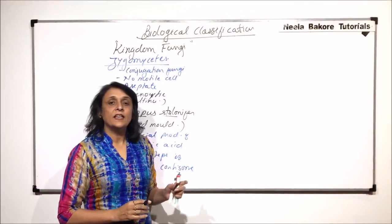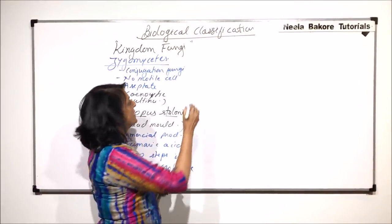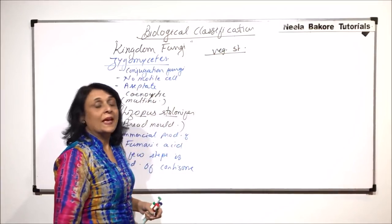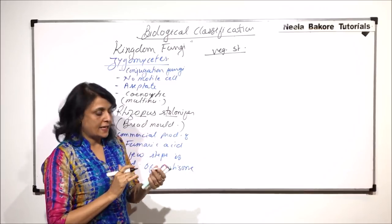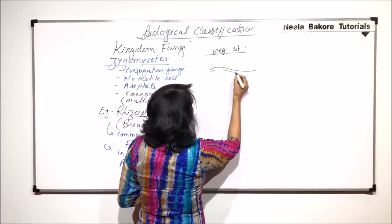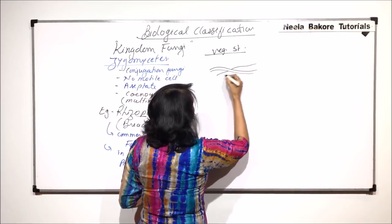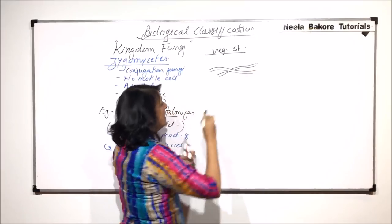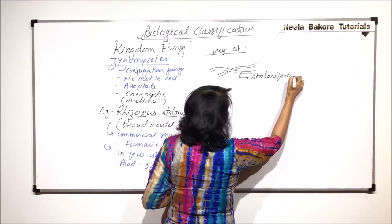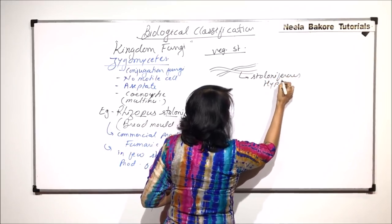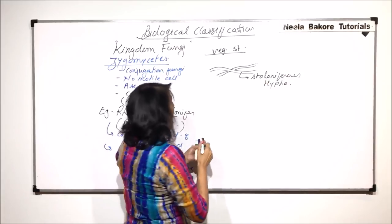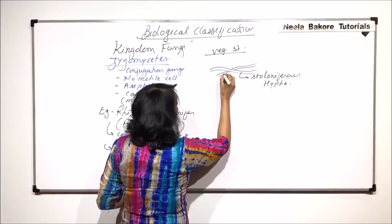Now, let us see the vegetative or the somatic structure, the vegetative structure of Rhizopus. When it is not reproducing, at that time there are only two types of hyphae which are seen. The ones which run on the substratum and these hyphae are known as stoloniferous hyphae.